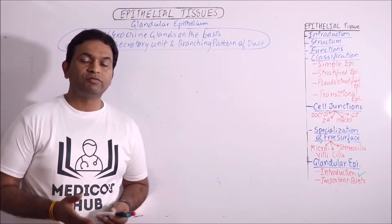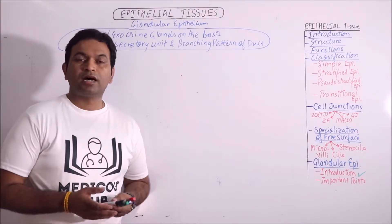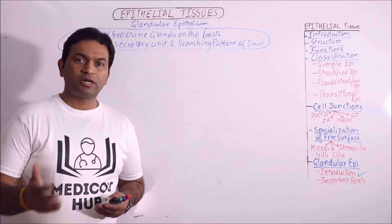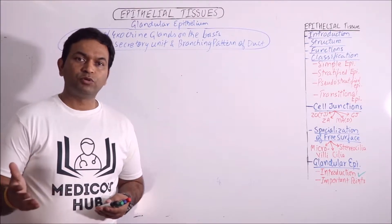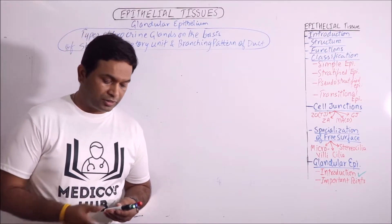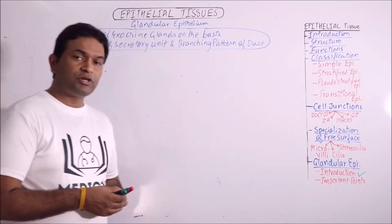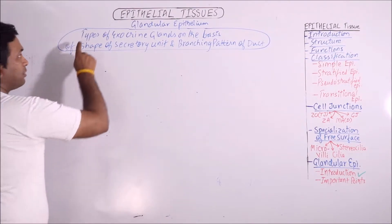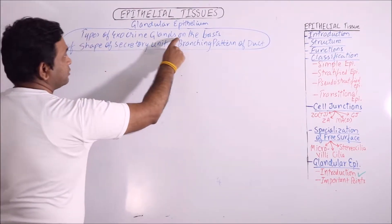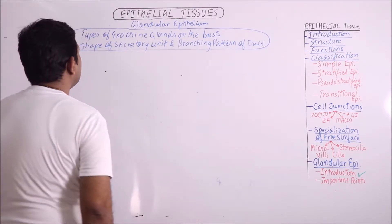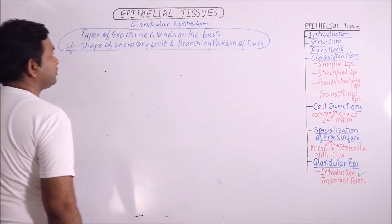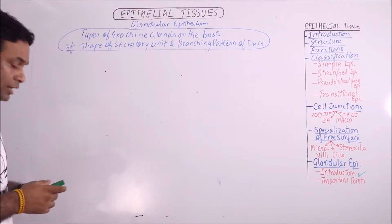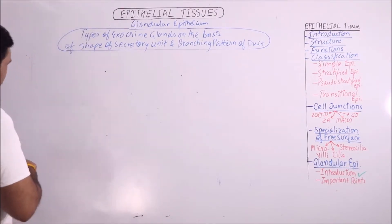The secretions of these glands are usually liquid in nature. These may be hormones, enzymes, mucus, or lipids. In this video, I am going to discuss the classification of types of exocrine glands on the basis of shape of secretory unit and the branching pattern of duct.